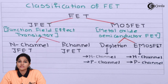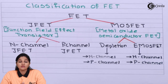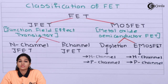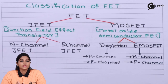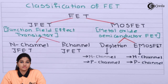Now let's see how the FET is classified. FET consists of a semiconductor material, and on that basis, it is classified into two types: Junction Field Effect Transistor (JFET) and Metal Oxide Semiconductor Field Effect Transistor (MOSFET). Based on the channel medium, JFET is further classified into N-channel JFET and P-channel JFET, whereas MOSFET is classified into Depletion MOSFET and Enhancement MOSFET, each further classified into N-channel and P-channel.